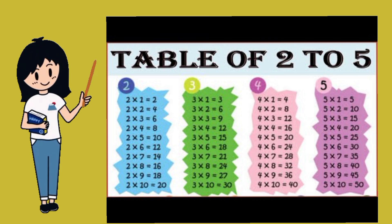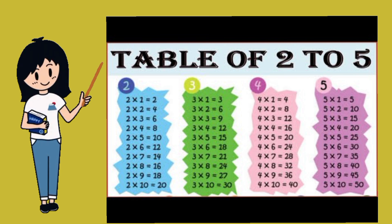Five sixes are thirty. Five sevens are thirty-five. Five eights are forty. Five nines are forty-five. Five tens are fifty.